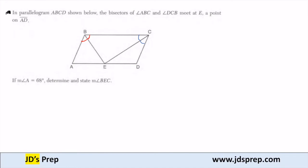So first thing, measurement of angle A is 68 degrees, so let's fill that in. Because measurement of A is 68 degrees, and this is a parallelogram, opposite angles are going to be congruent. So if A is 68, then that means that angle C is also 68 degrees.